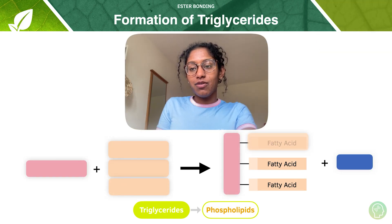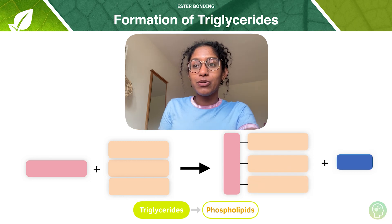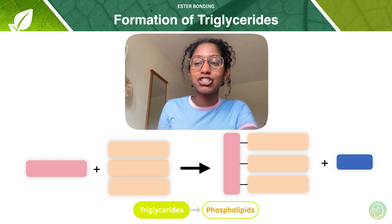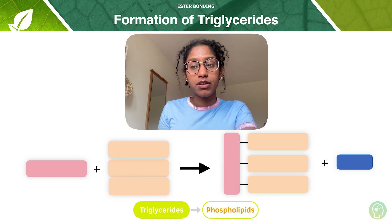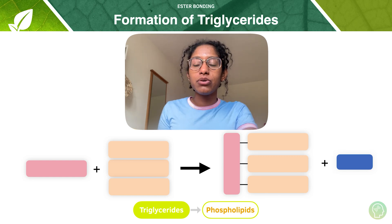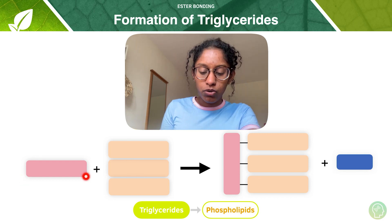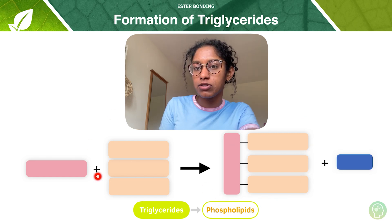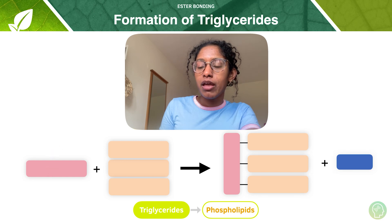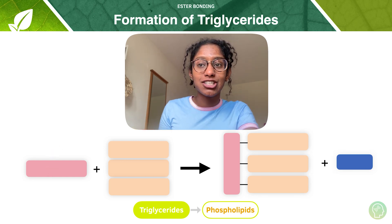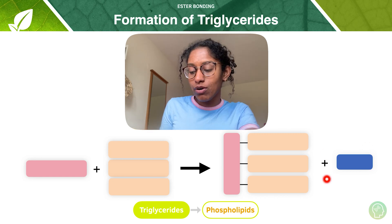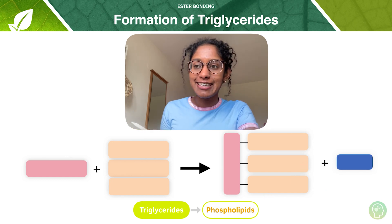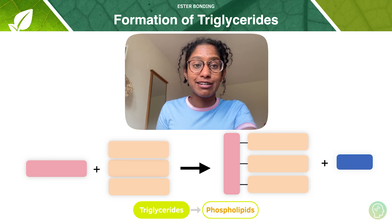I'm showing you a few empty blobs on the screen, and I want you to do your best to try and fill in what's happening here. First, have a think about what reaction triglycerides are formed by. And number two, what are the constituents in the reaction — what are these monomers? And if you know the reaction, you'll know what molecule is produced in addition to our final triglyceride structure. Pause the video and have a think before I reveal the answer.